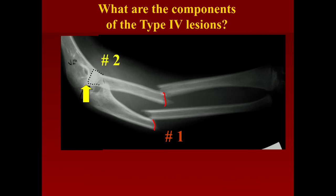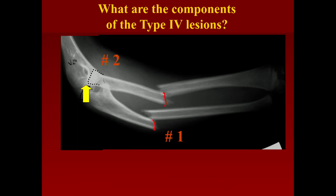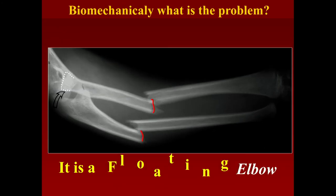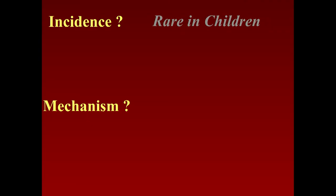What is this fracture pattern? It's a type 4. The components are fractures of the diaphysis of both the radius and ulna, and a dislocation — usually anterior of the radial head. Biomechanically, what are you going to do? You have to fix the distal segment. The incidence of type 4 in children is very rare. The mechanism is probably the same as the type 1 lesion.